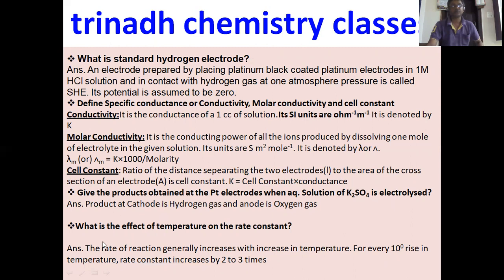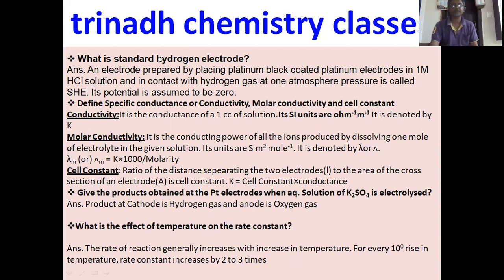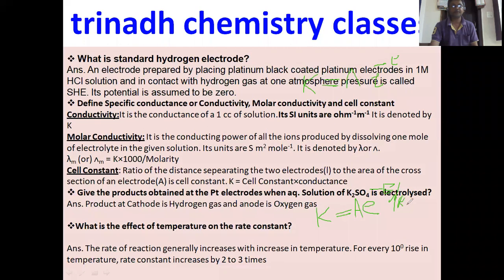What is the effect of temperature on rate constant? The rate constant of a reaction generally increases with increase in temperature. For every 10 degree rise in temperature, the rate constant increases by 2 to 3 times. The Arrhenius equation is K = A × e^(−Ea/RT), where A is the Arrhenius factor, Ea is the activation energy, R is the gas constant, and T is the absolute temperature.